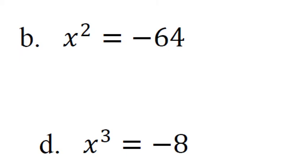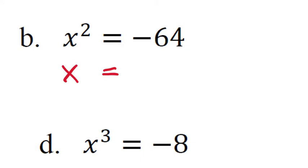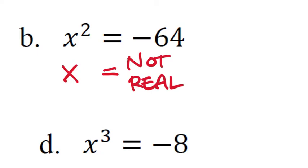Part B: x²=-64. It's common for students to say x=-8, but that's not true. Negative 8 times negative 8 is positive 64, because two negatives multiplied give a positive — the exponent 2 is even. So neither positive 8 nor negative 8 works. When a power of 2 equals a negative value, there is actually no real solution. An answer does exist in mathematics, but it's not a real number — that's covered in 10th grade.